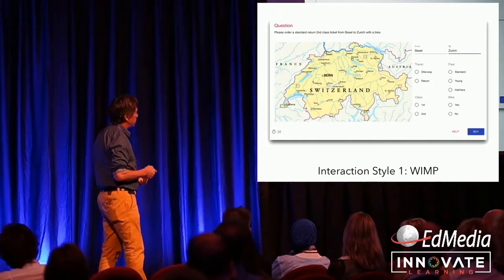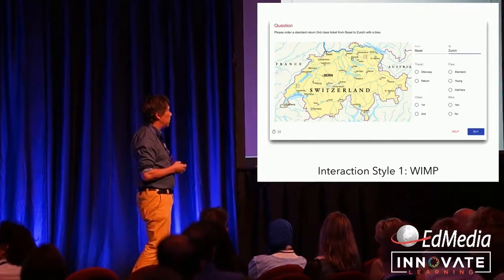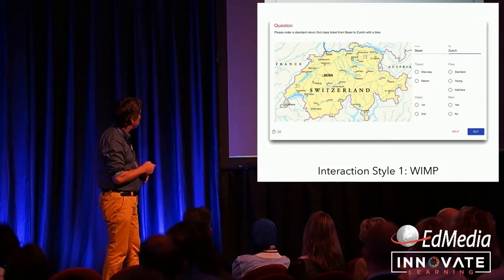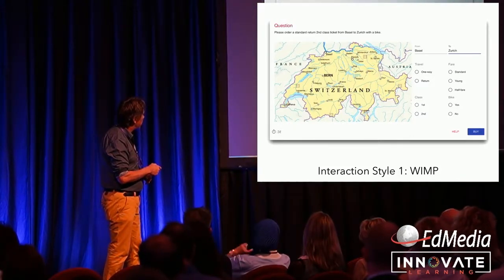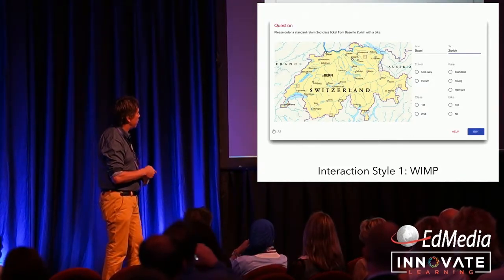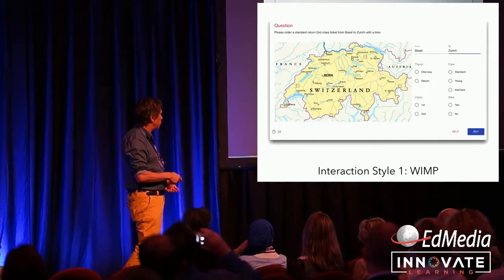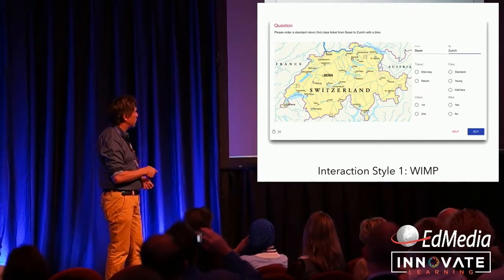I say, listen, you see this interface? Please order four train tickets. Please order a standard return second class ticket from Basel to Zurich with a bike. And this is called a window, icons, menu, pull down, so it's a traditional interface.